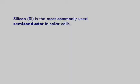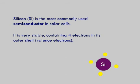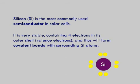Silicon is the most commonly used semiconductor in solar cells. It is very stable, containing four electrons in its outer shell, its valence electrons, and thus will form covalent bonds with surrounding silicon atoms.